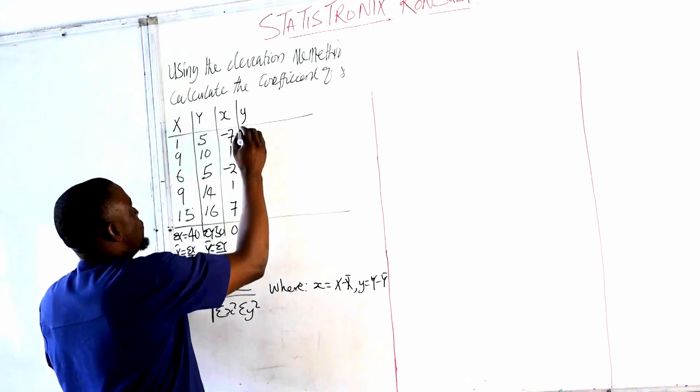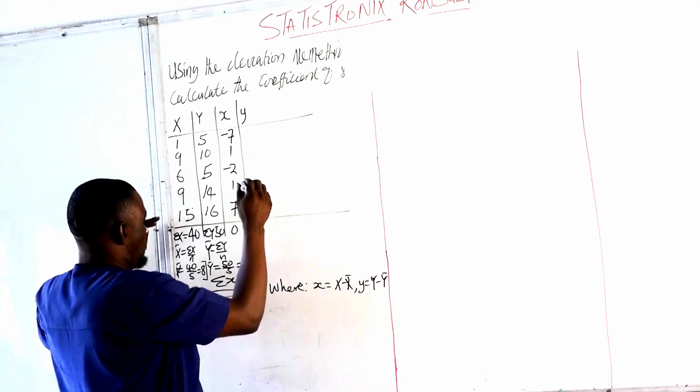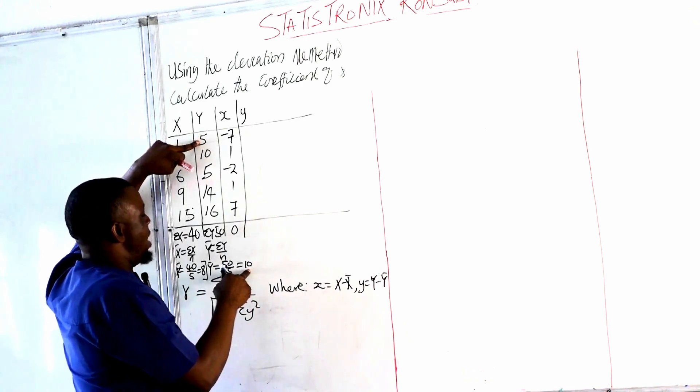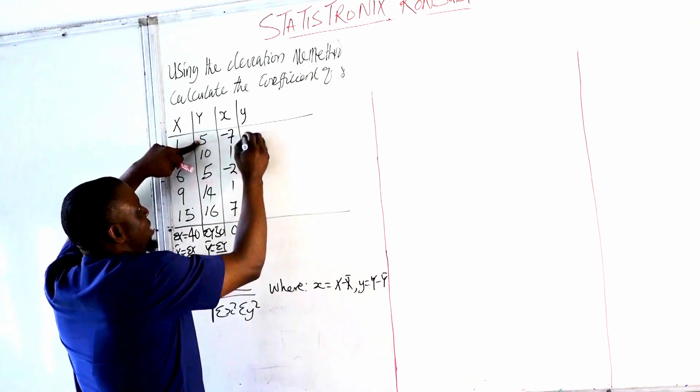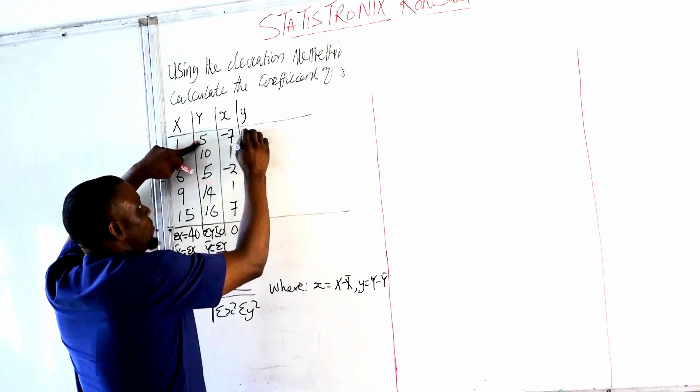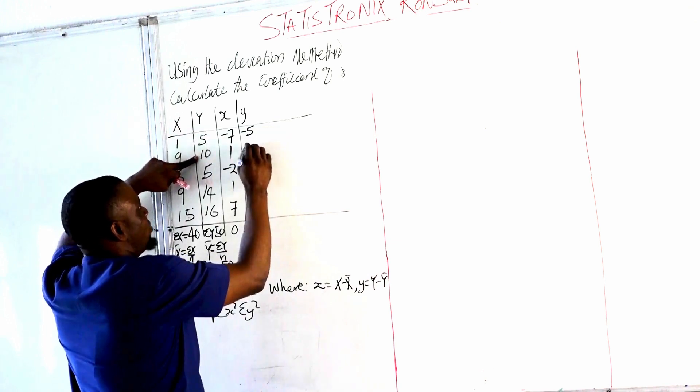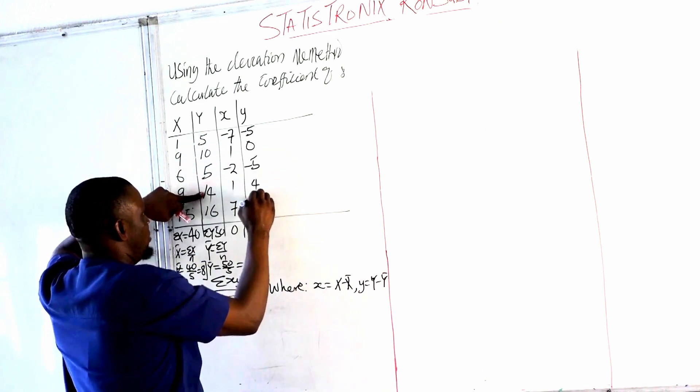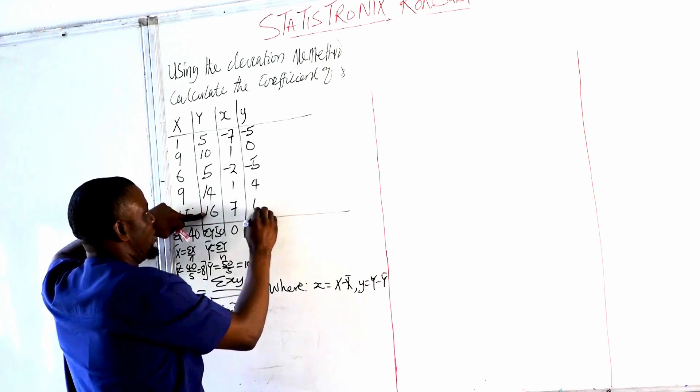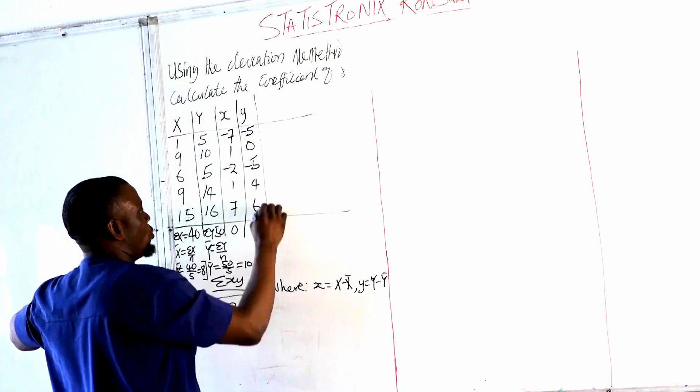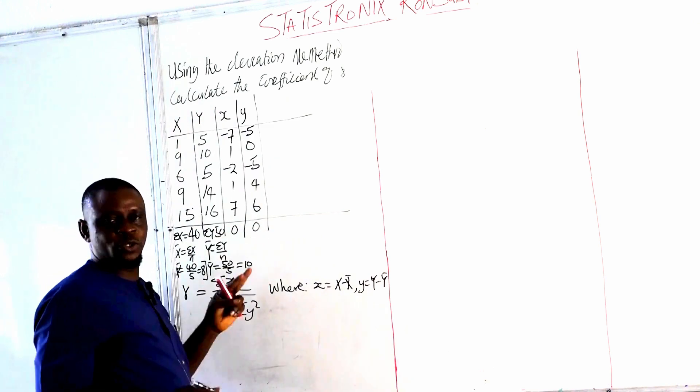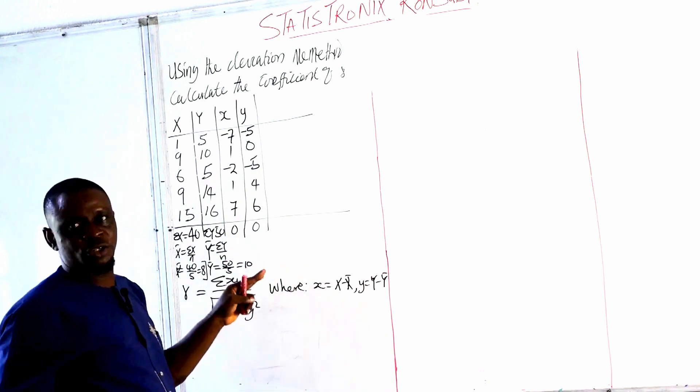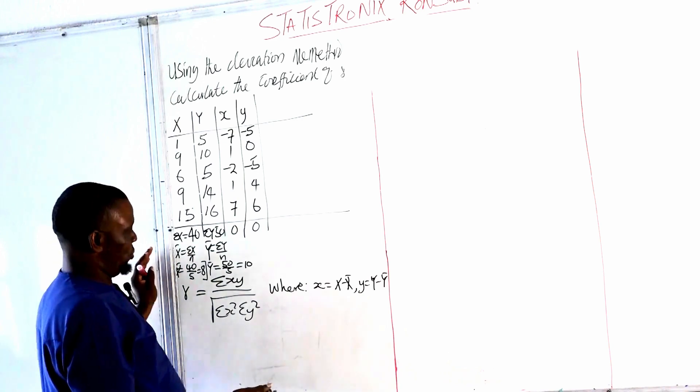So our small y would be equal to, now the value of Y here is 5 and then the mean of Y is 10. So 5 minus 10 is minus 5, 10 minus 10, 5 minus 10, 14 minus 10 is 4, 16 minus 10 is 6. Also, if you sum this, it will also be equal to 0, which also satisfies the property of the arithmetic mean that the sum of the division from the mean is equal to 0.